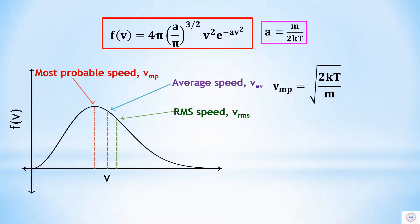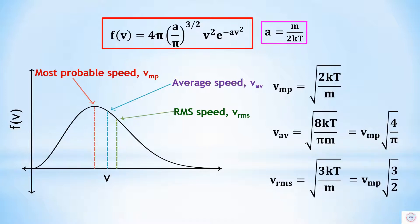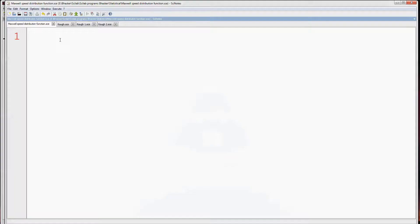We can also calculate average speed and root mean square speed. The expression for average speed is square root of 8kT by pi*m, or it can also be calculated from most probable speed. The expression for root mean square speed is square root of 3kT by m. Along with plotting the distribution function, we are also going to evaluate most probable speed, average speed, and root mean square speed. So let's move on to the programming.